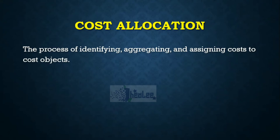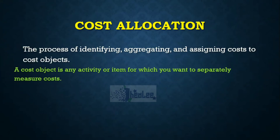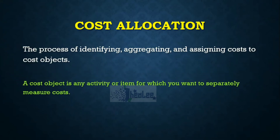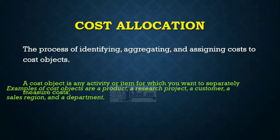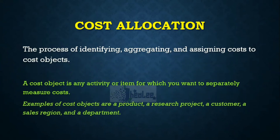When we talk about cost objects, a cost object is any activity or item for which you want to separately measure costs. Examples include a product, a research project, a customer, a sales region, and a department.